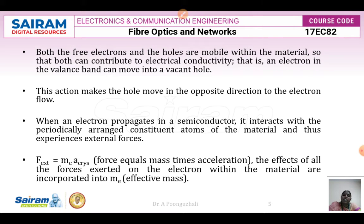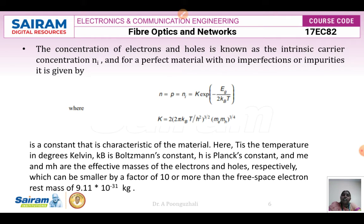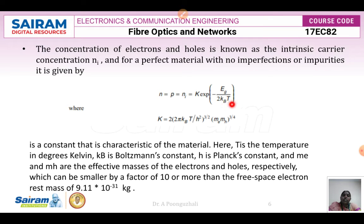The effect of all forces exerted on the electron within the material are incorporated into the effective mass. The concentration of electrons and holes is known as the intrinsic carrier concentration Nᵢ. For a perfect material with no imperfections or impurities, the number of electrons equals the number of holes equals Nᵢ. The intrinsic carrier concentration can be expressed as Nᵢ = K × exp(−Eg / 2KᵦT), where Eg is the energy gap, Kᵦ is the Boltzmann constant, and T is the temperature.